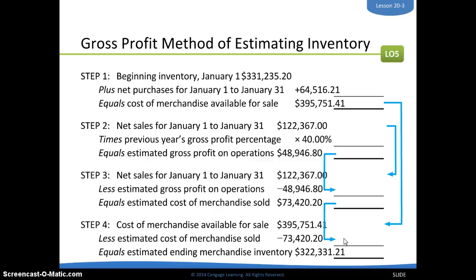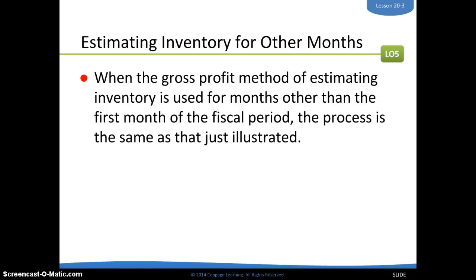Remember, this is estimated — not an exact science, but it's an estimate. We use this for months other than the fiscal year-end. So if you decided you wanted to do this in May because you needed an estimated inventory, you would do the same steps. This example just shows it for January, but you could do it for any month or any period of time through the year that you had not done a physical inventory.